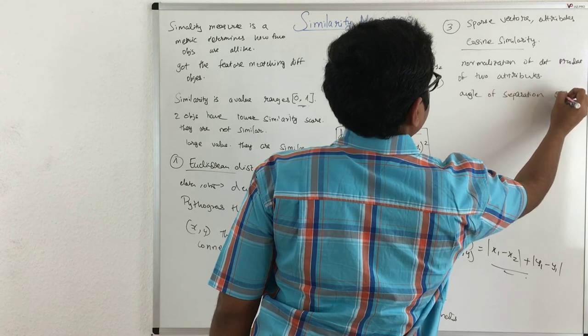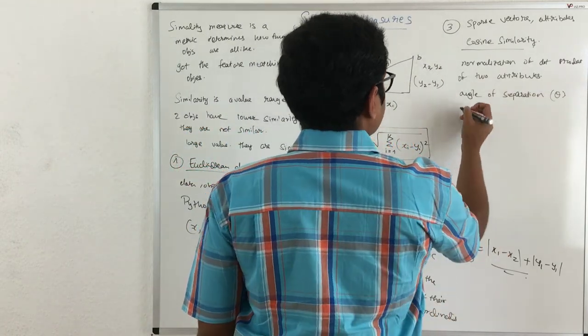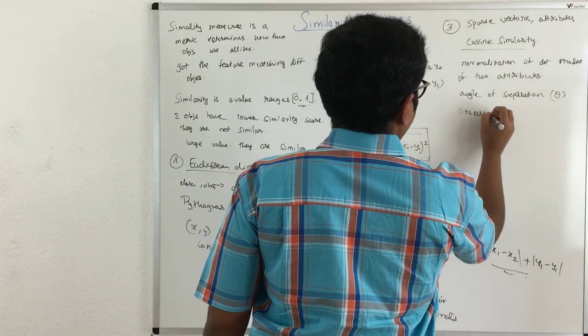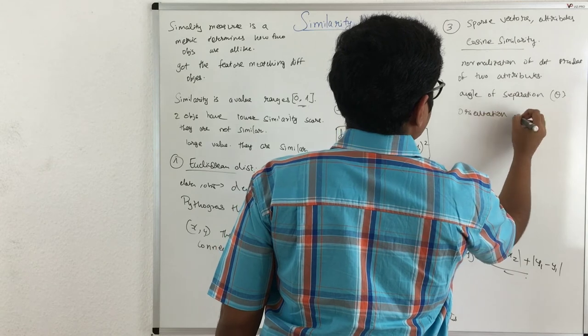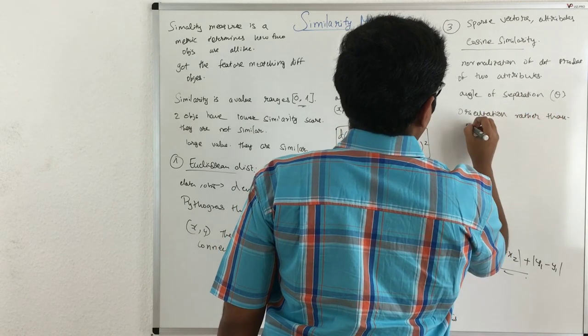We can call it as theta here, and so cosine similarity or cosine distance is mainly used or it judges the orientation of two input vectors rather than their magnitude.